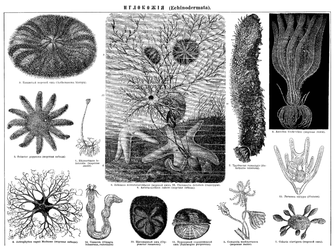Echinoderms become sexually mature after approximately two to three years, depending on species and environmental conditions. They are nearly all gonochoristic, though a few species are hermaphroditic. The eggs and sperm cells are typically released into open water where fertilization takes place. The release of sperm and eggs is synchronized in some species, usually with regard to the lunar cycle; in other species, individuals may aggregate during the reproductive season to increase the likelihood of successful fertilization. Internal fertilization has been observed in three species of sea star, three brittle stars and a deep-water sea cucumber.